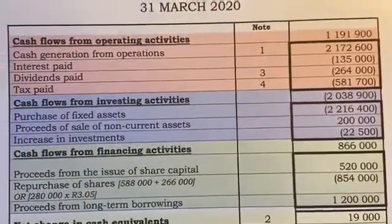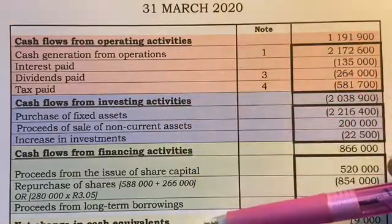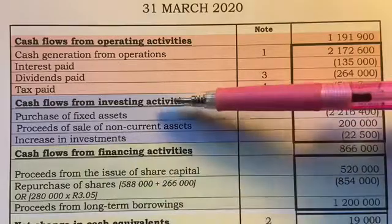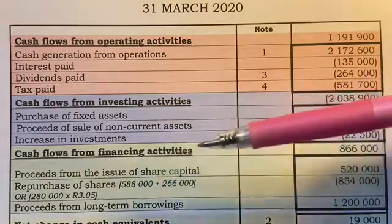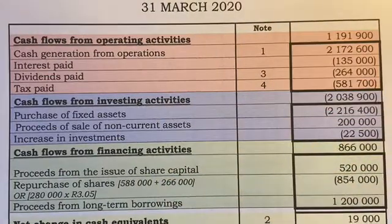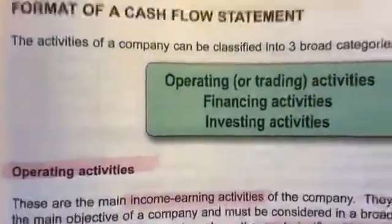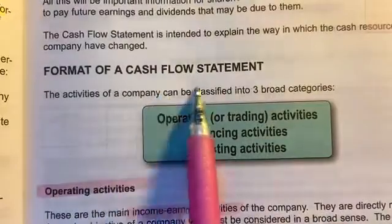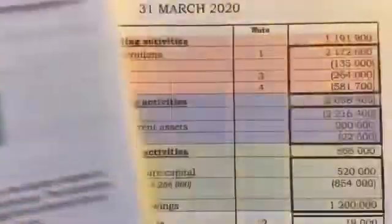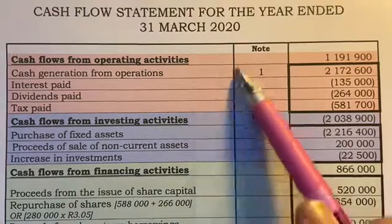So what the cash flow statement does is break down some transactions to see how cash is coming in and flowing out — it will tell you specifically about the cash, how it came into the business and how it went out. In your textbooks there's a heading that says 'the format of the cash flow statement,' and they break it down into three sections.